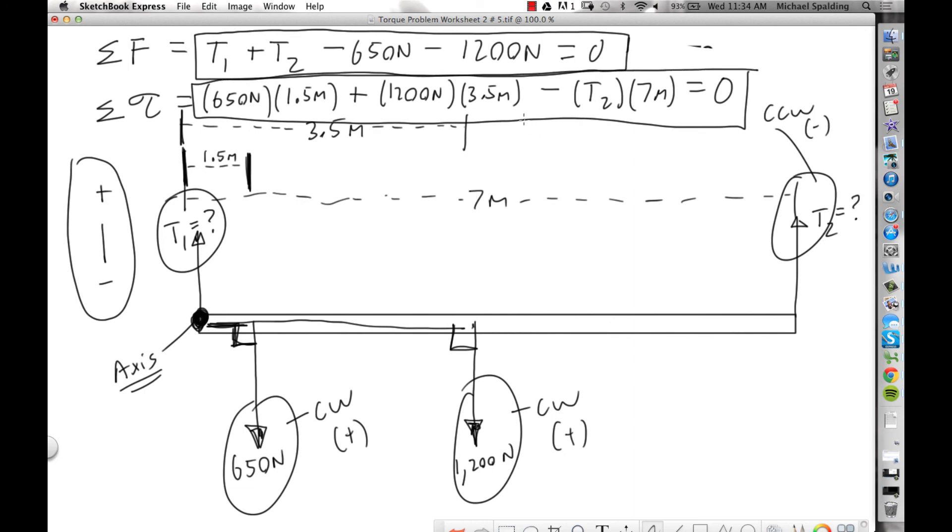So now what you do is you take this equation, solve it for T2. T2 comes out as 739.3, and then once you got that, plug T2 up here and then solve for T1. It's just a system of equations. So T1 is 1110.7.